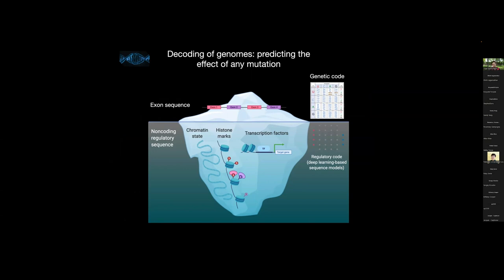Protein coding genes are a little less than 2% of the genome, and the other 98% encode regulatory signals that are regulating how these genes are turned on and off, as well as RNA mRNA processing and transport in terms of creation of proteins.